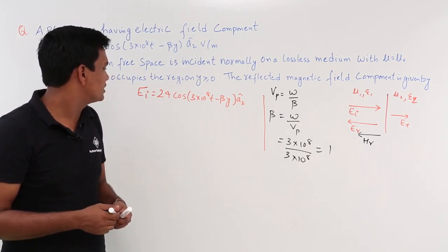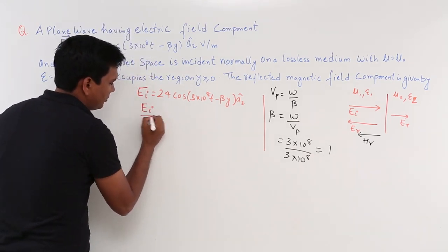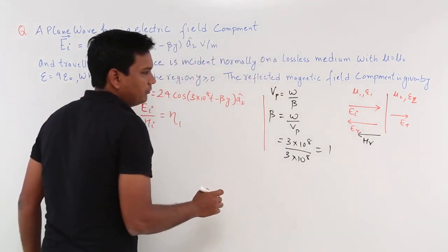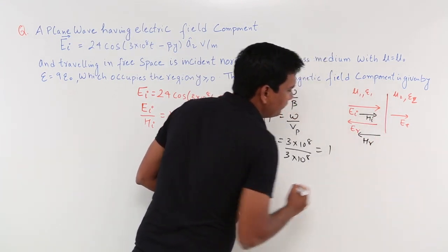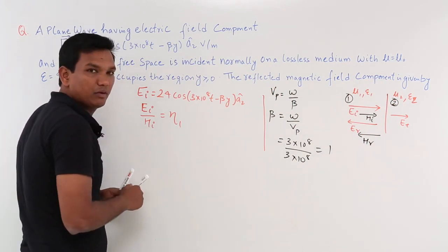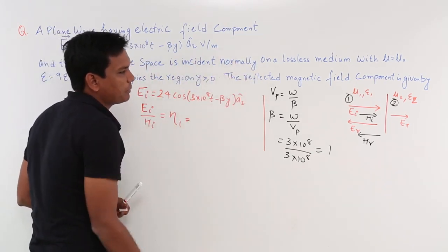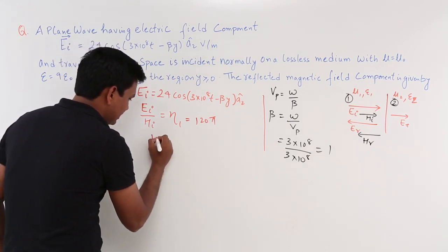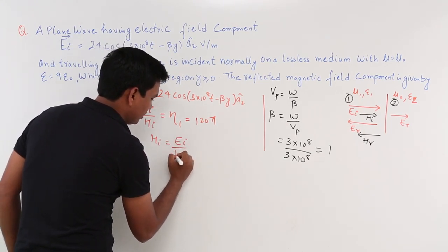Now I have to find HI. I know that EI/HI = η₁ because EI and HI are both in medium 1. When the wave is incident, there will also be an incident magnetic field. So EI and HI are in medium 1. The region 1 is free space, so the intrinsic impedance η₁ is 120π. Therefore HI = EI / 120π.